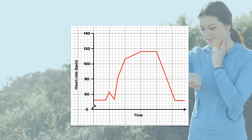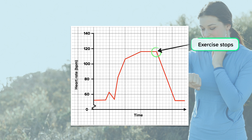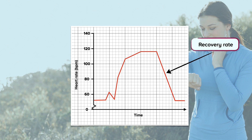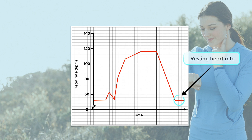We can see that the exercise has stopped where the heart rate begins to rapidly decrease. After exercise has stopped, the graph shows a rapid decline in heart rate. This is known as the recovery rate. This shows how fast the heart rate returns back to resting. A quicker recovery rate, or steeper line on the graph, shows a fitter heart.